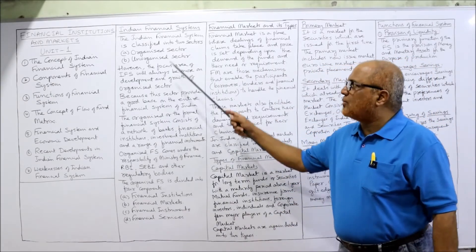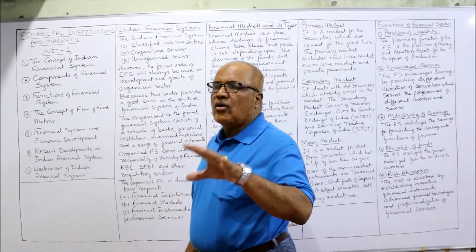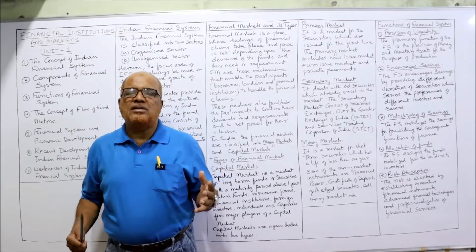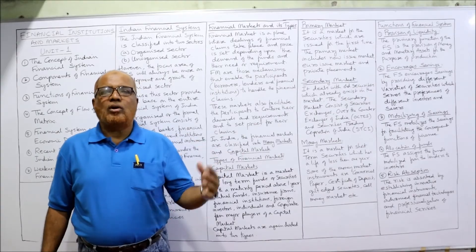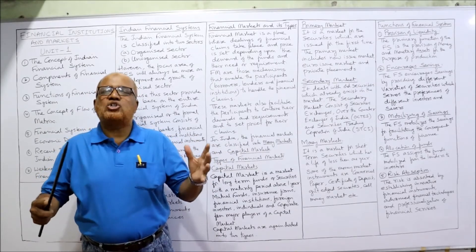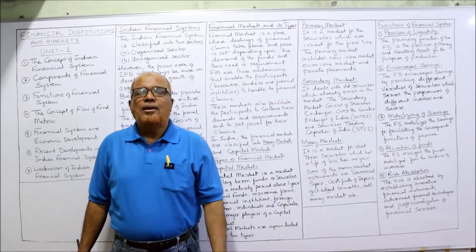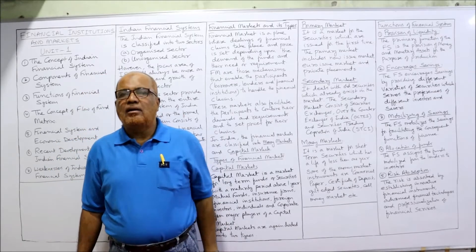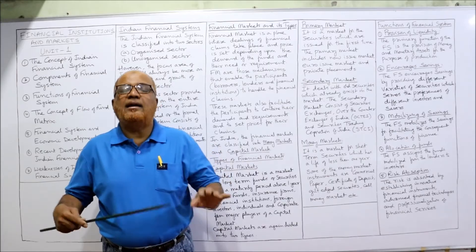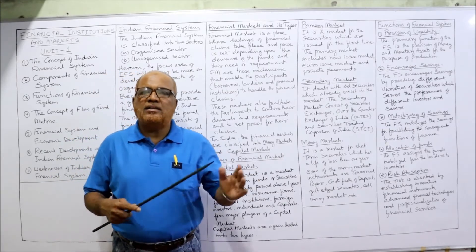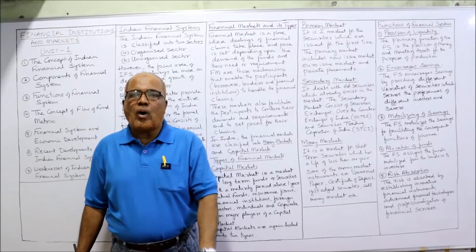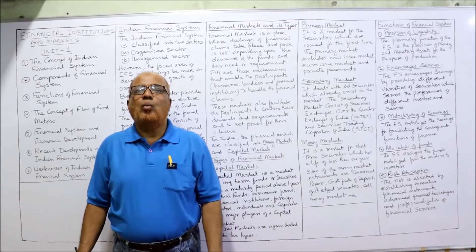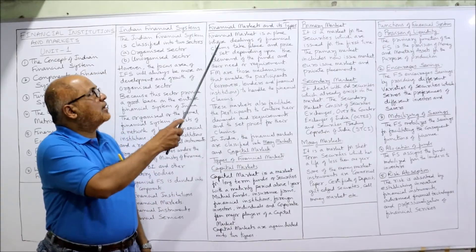Now, financial markets and their types. In ordinary language, a market is a place where commodities are bought and sold and buyers and sellers meet. But from the financial system point of view, a financial market is a market where finance is borrowed and lent — where people who supply funds and people who require funds meet. It is a market where lenders and borrowers meet, called the financial market.